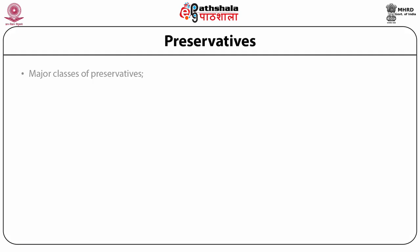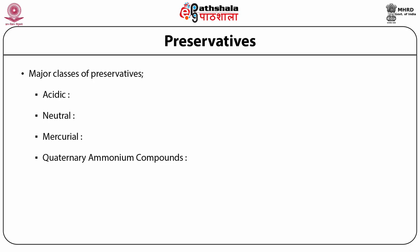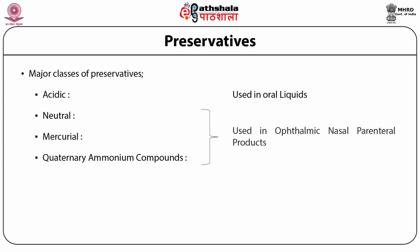There are four major classes of preservatives: acidic, neutral, mercurial, and quaternary ammonium compounds. The last three classes find little value in oral liquids but are widely used in ophthalmic, nasal, and parenteral products. Only the first category — acidic preservatives — is used widely in oral liquids.